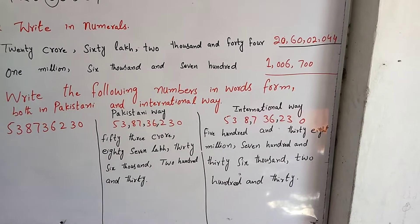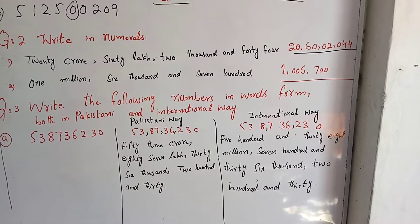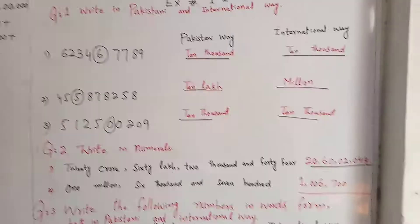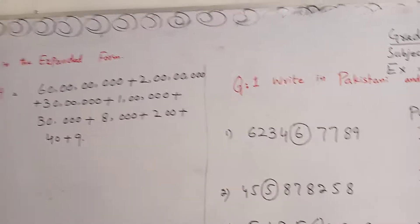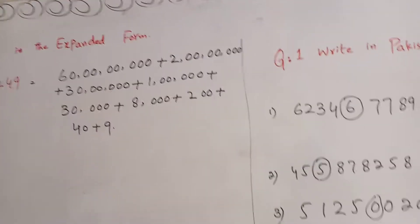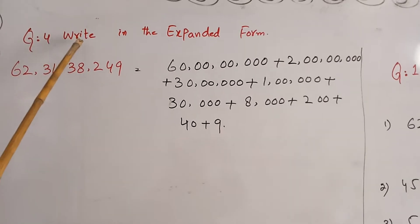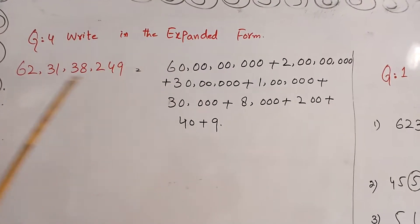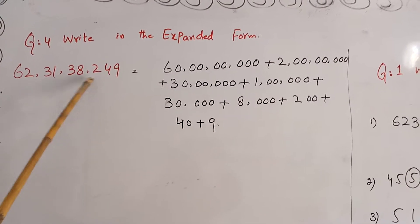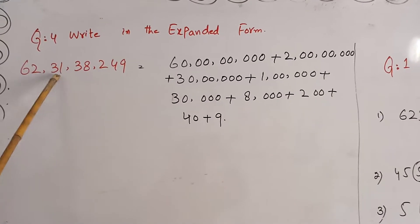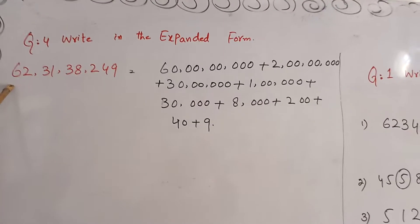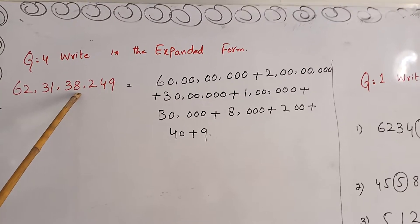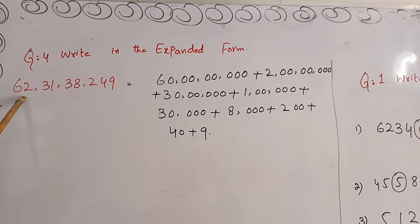This is the way I have solved one question for you and the rest you have to do yourself. Now question number four — the last question of this exercise: Write in expanded form. We have ones, hundreds, thousands, ten-thousands, lakh, ten lakh, crore, ten crore. This means after hundreds we have commas after 2-2 values, so it is in the Pakistani value system.